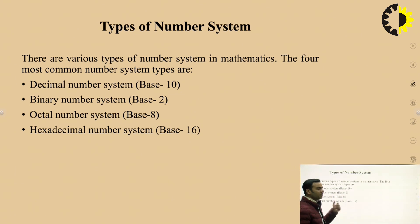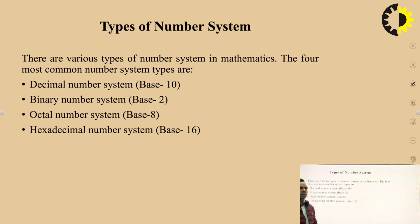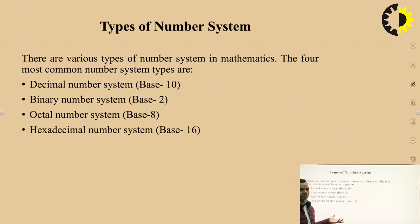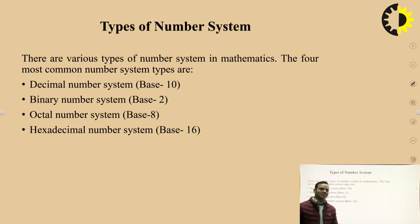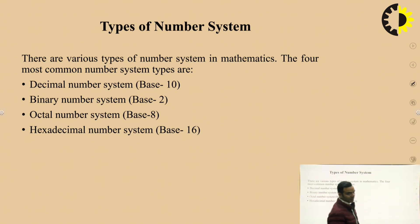Let us start with number systems. The four most famous number systems are: the decimal number system, which we are very familiar with from childhood; the binary number system; the octal number system; and the hexadecimal number system.